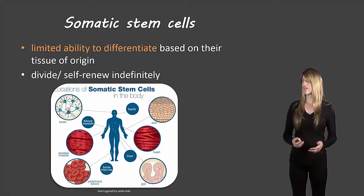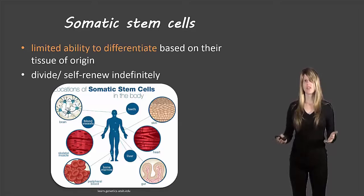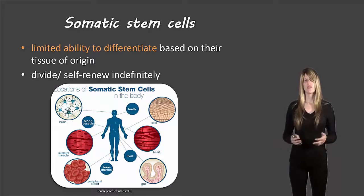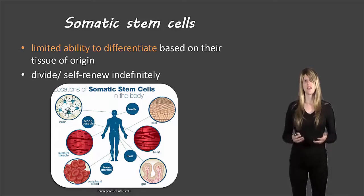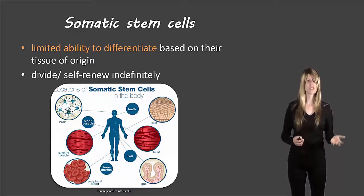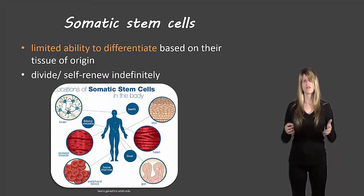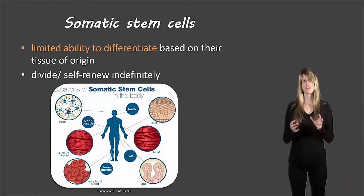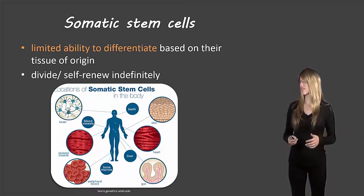Adult stem cells, on the other hand, can differentiate into different types of cells, but cannot differentiate into any type of cell. For example, there are adult stem cells that can turn into any type of blood cell, but they couldn't turn into a nerve cell. So they have the ability to differentiate into a closely grouped type of cells, but not any type of cell they want.